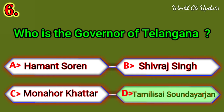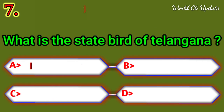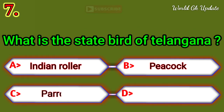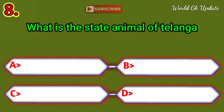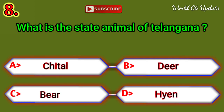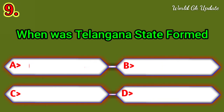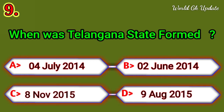What is the state bird of Telangana? The right answer is the Indian Roller. What is the state animal of Telangana? The right answer is the Chital (spotted deer). When was Telangana state formed? The right answer is 2 June 2014.